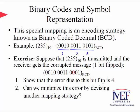This special mapping is called Binary Coded Decimal, or BCD. In this coding strategy, each decimal digit is mapped to exactly four bits, making the conversion quite easy. Consider a real-life case: suppose the decimal number 235 is transmitted but one bit is flipped during transmission, resulting in a corrupted version. It is easy to show that the error value due to this flip is four. A more interesting question is whether we can minimize this error by devising another mapping strategy.